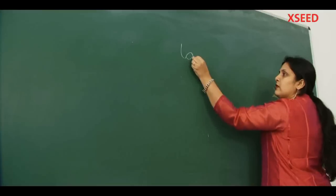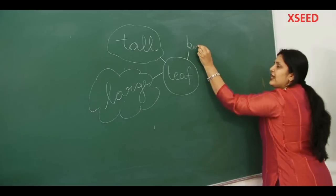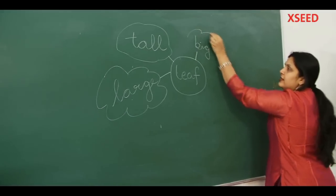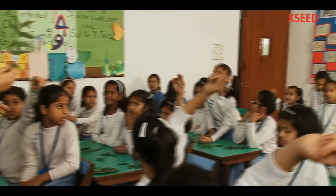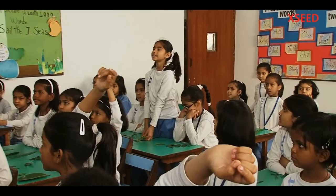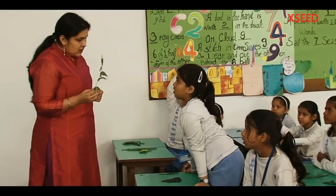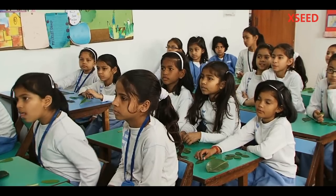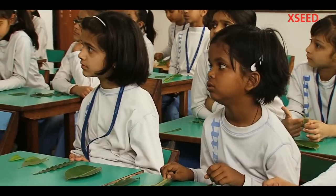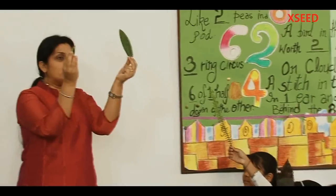Tall. Okay. Big. So I like the words that you're coming up with. Is there anything else about the leaf? Yes ma'am, it's a dark color. Which dark color is it? Dark green. Its leaves are zigzag. Some of you said that it is large, some said it's tall, some said it's big. What else? Huge. Oh, that's another word. This one is comparatively huge. So what will this be? Small.